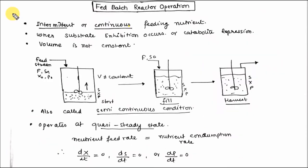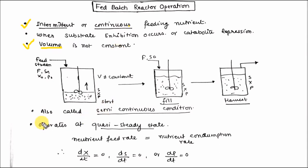This is the introduction about fed batch operation. In fed batch operation, intermittent or continuous feeding of nutrient is done. The fed batch operation is used when substrate inhibition or catabolic repression is present. Volume is not constant — this is a very important parameter in fed batch reactor operation. It is also called semi-continuous condition and it operates at quasi steady state.